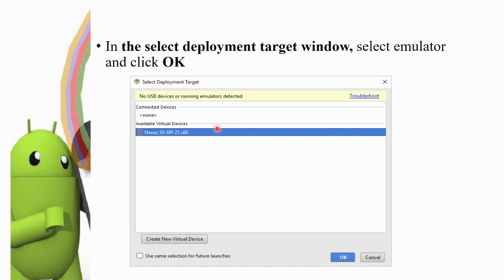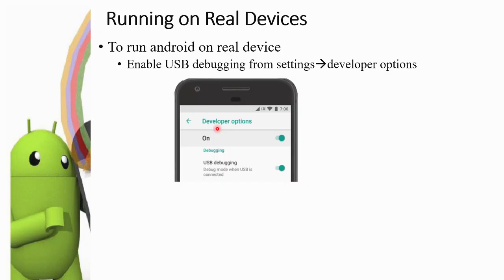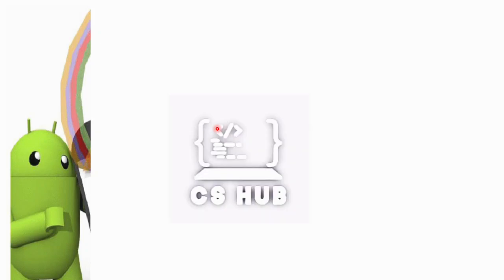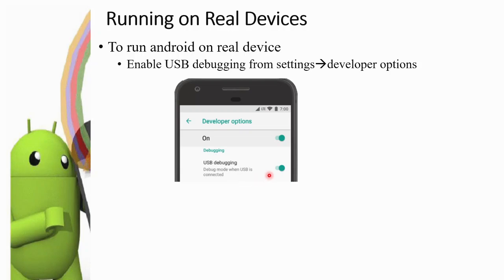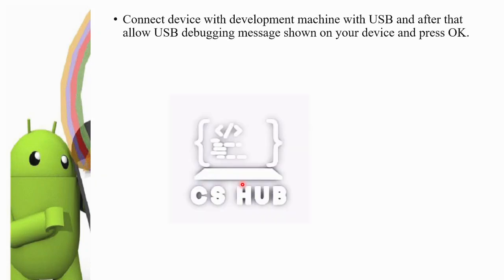To enable Developer Options, go to Settings > About Phone and tap the software version (Build Number) seven times. This will enable Developer Options. Then go to Developer Options and enable USB Debugging. Connect your device to the computer with a USB cable.